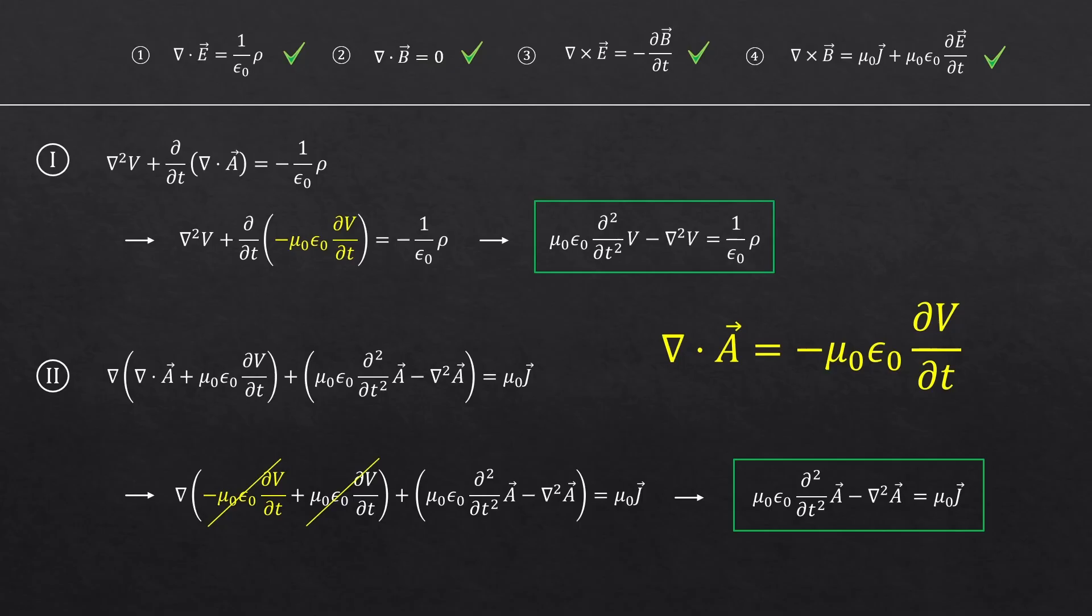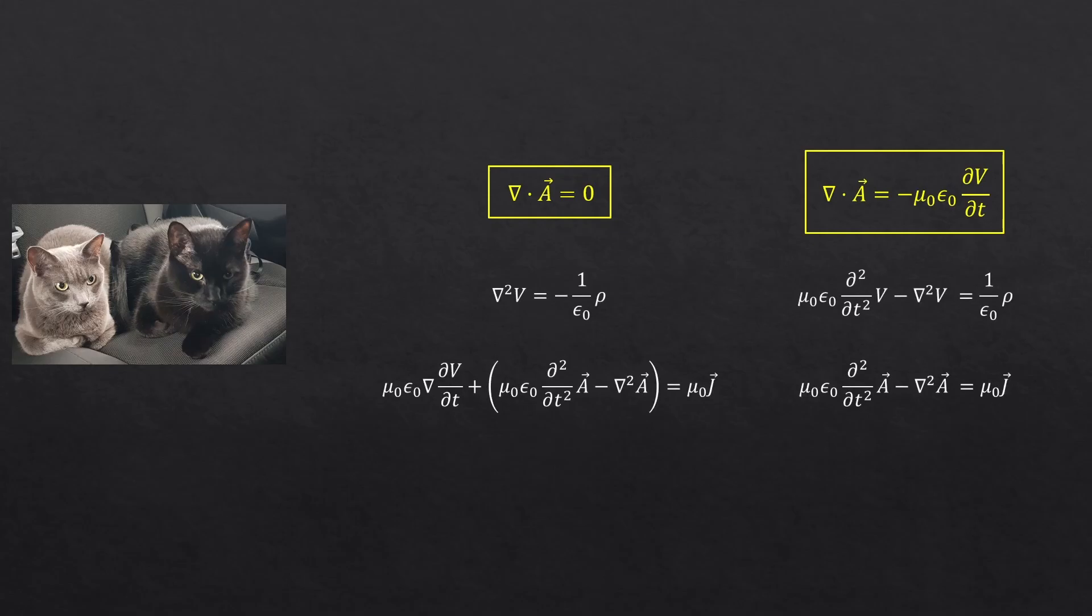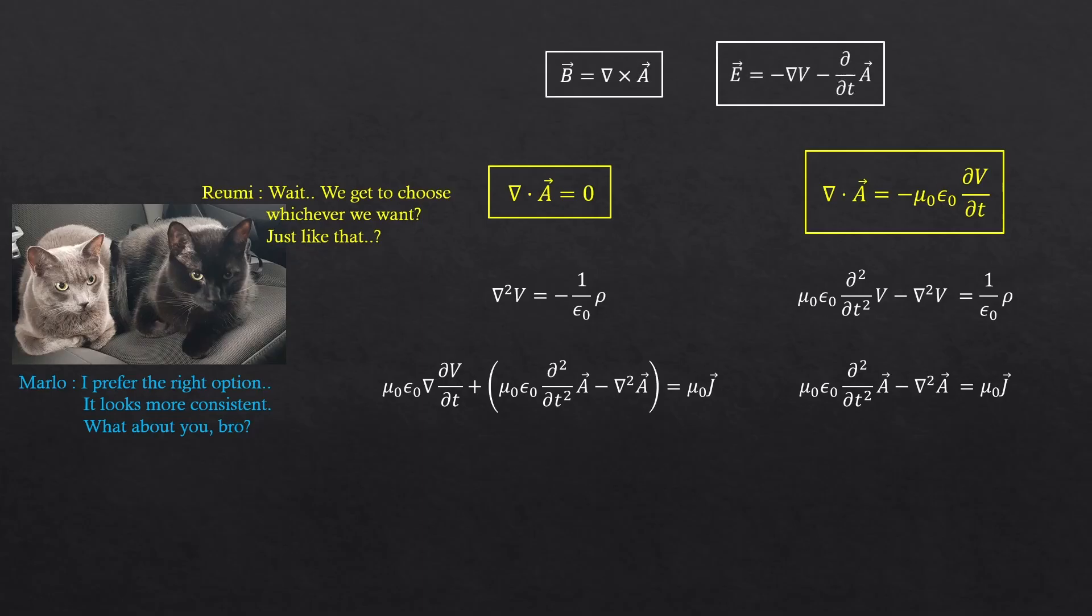So, what do you guys think, Rumi and Marlo? Rumi just asked a really important question. Both methods seem to have their pros and cons. But are we even allowed to define the divergence of A however we like? Because what if they result in different electric field and magnetic field?